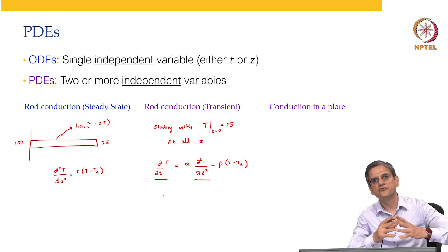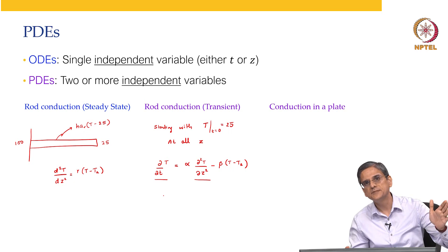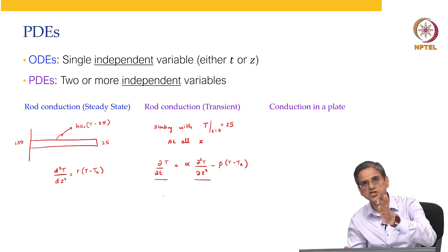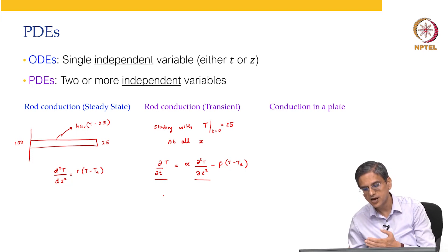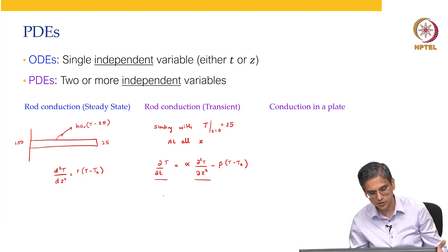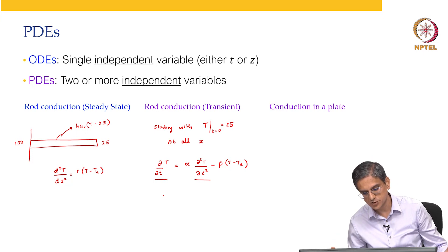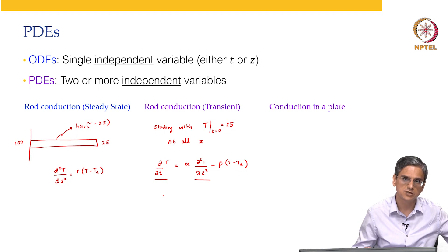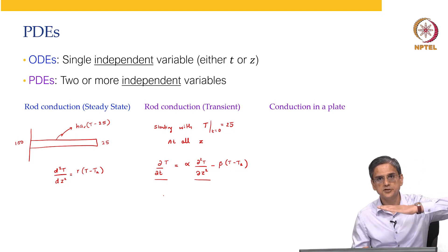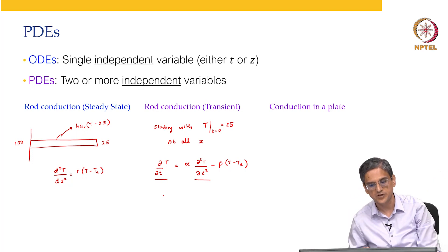What happens if a lot of time passes? Let us say one hour later, you come back and look at this particular fin. What happens is that the temperature does not change with time anymore because it has reached steady state. So dT/dt becomes 0 at steady state, and your gamma is going to be nothing but beta over alpha. When that happens, you get a steady-state solution, which is the solution to the original boundary value problem that you solved.